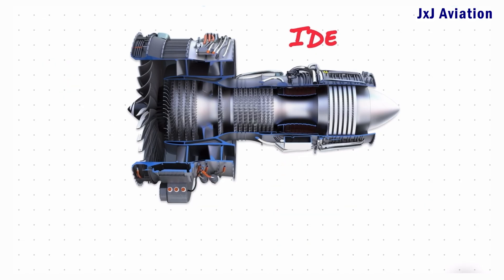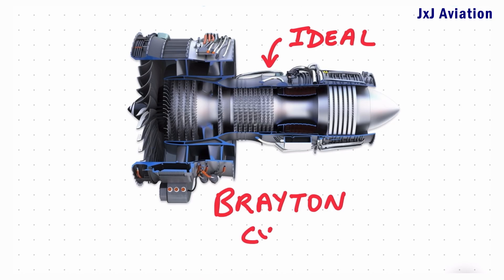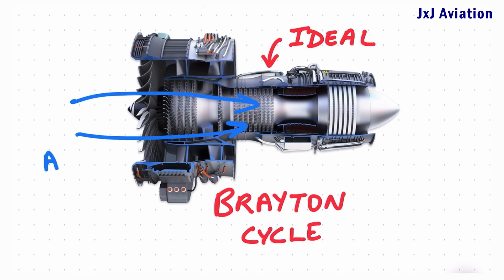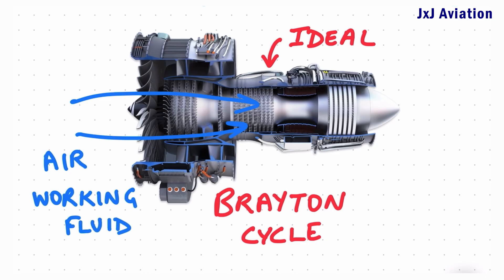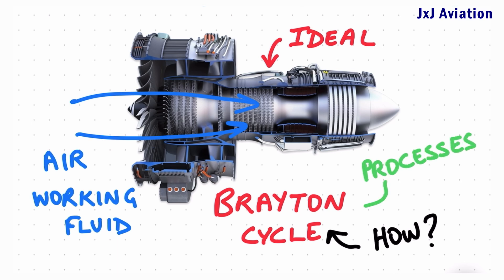An ideal gas turbine engine follows the Brayton cycle. The Brayton cycle describes the behavior of air as a working fluid in the engine. Before we look at how the Brayton cycle is applicable for the gas turbine engine, we need to look at the different processes involved in the Brayton cycle.